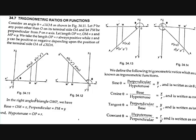In the right angle triangle OMP, OM is X and PM is Y, and the hypotenuse is R. The trigonometric equations are: sin theta equals perpendicular by hypotenuse, which is PM by R. Cos theta is base by hypotenuse, or adjacent side by hypotenuse. Tan theta, or tangent, is perpendicular by base, written as tan theta.